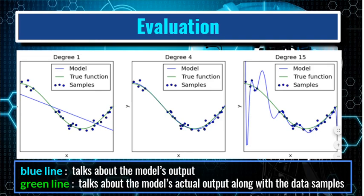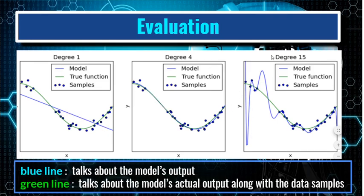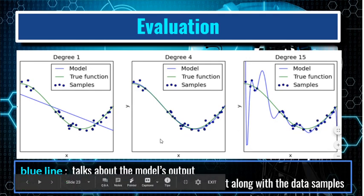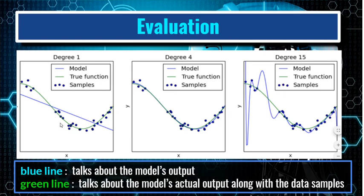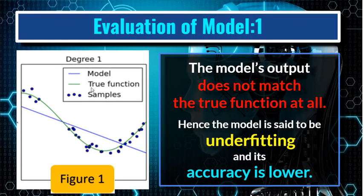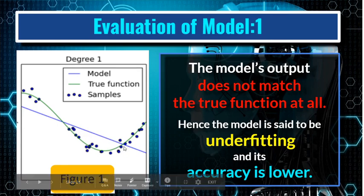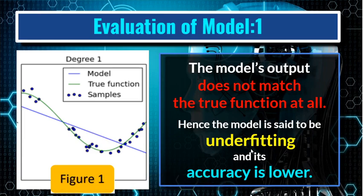In each graph, the blue line shows the model's output and the green line shows the model's actual output along with the data samples. In the first model, the green line is the real or true response of the user fed into the machine and the blue line shows the model's output. The model's output doesn't match the true function at all. Hence the model is said to be underfitting and its accuracy is lower.